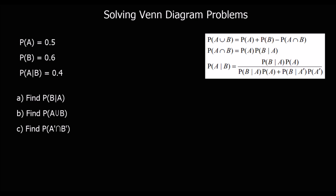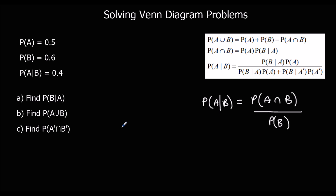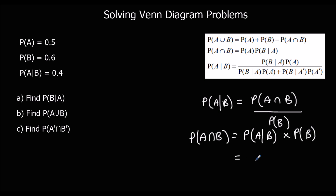This time we've got conditional probability information. Using the given-that formula: P(A|B) = P(A∩B) / P(B), so P(A∩B) = P(A|B) × P(B) = 0.4 × 0.6. Since 4 × 6 = 24, that gives us 0.24. So we can now draw the Venn diagram with the middle section as 0.24.